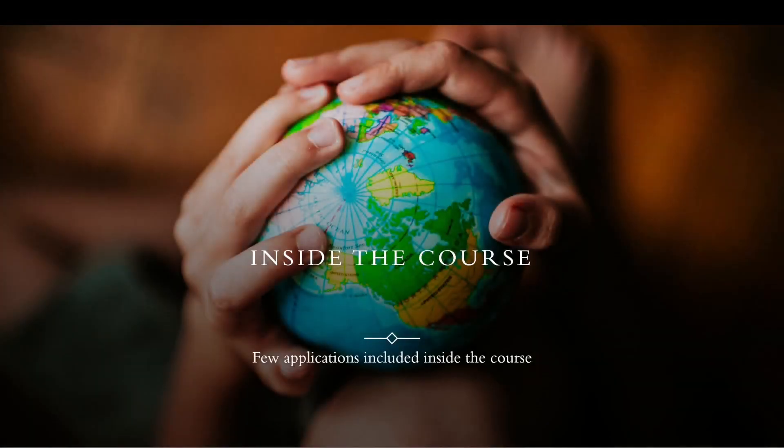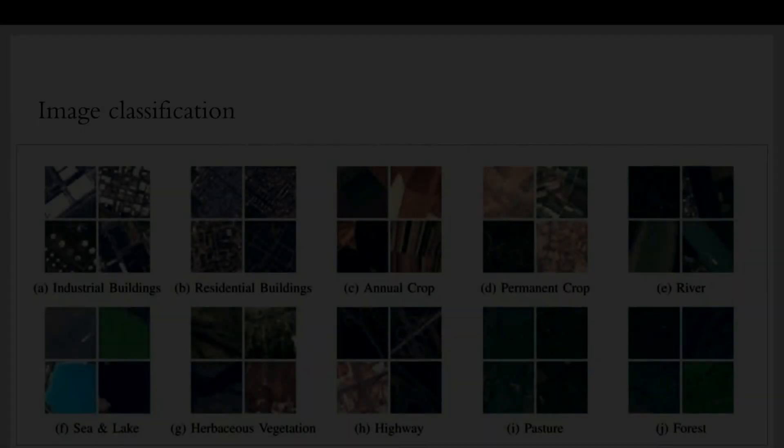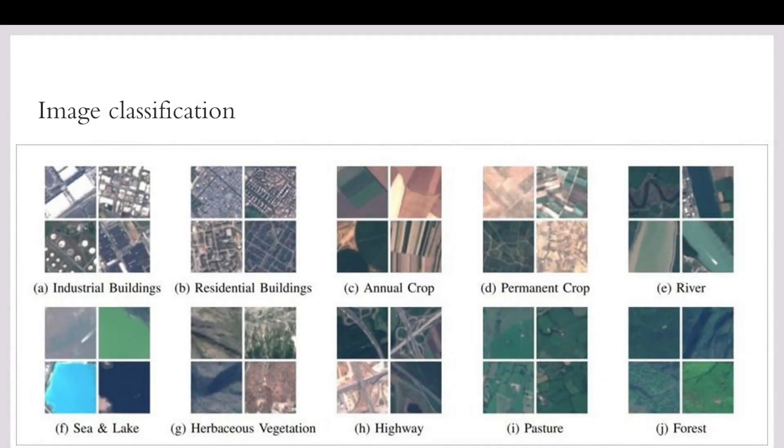Inside the course, I am going to highlight a few of the applications. The first task we are going to do is image classification based on satellite imagery. We are going to classify our dataset into 10 different classes. It's the EUROSAT dataset, freely available on Kaggle.